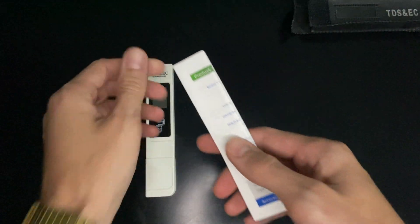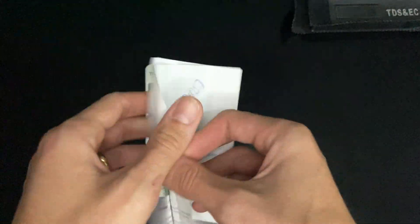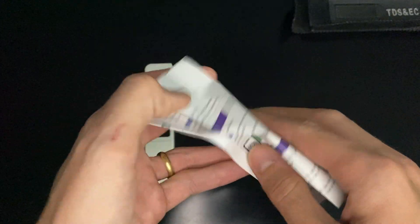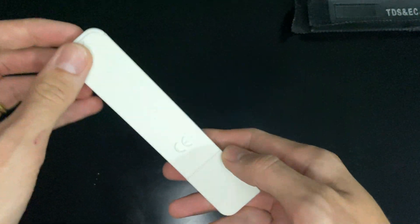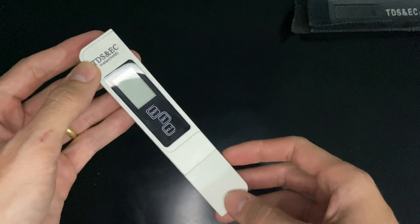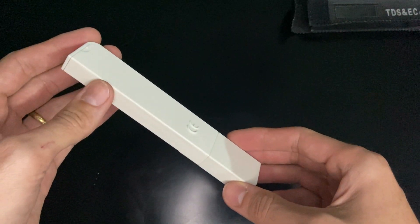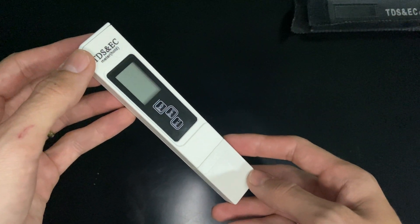And here is the manual. This instrument, the TDS, is used to measure the quality of water. TDS stands for Total Dissolved Solids.